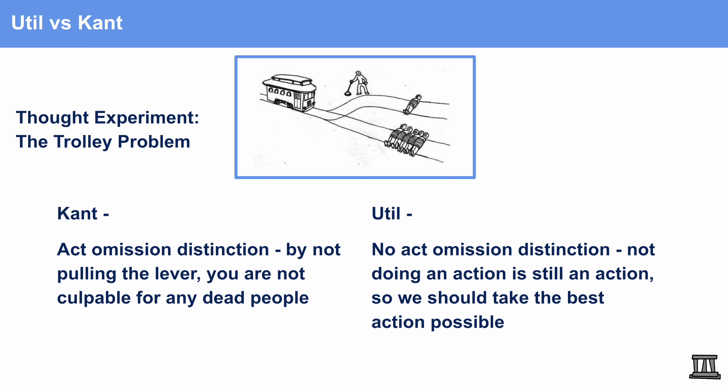Now let's talk about the nuances between utilitarianism versus Kant using the trolley problem. The person is holding a lever and a train is hurtling towards the tracks. If the person pulls the lever, it redirects the train to kill one person, but if the person does nothing, five people die. According to Kant's act-omission distinction — which says that if you don't do an action you're not culpable for what happens — by not pulling the lever you're not culpable for any deaths, because not doing an action is not an action. So if the person just raises their hands and lets the train pass, they're not actually killing anyone.